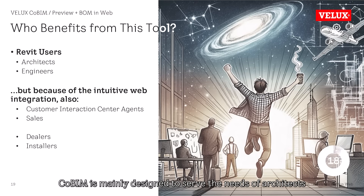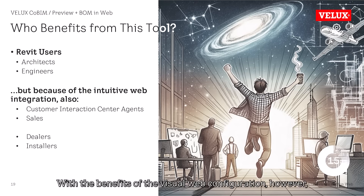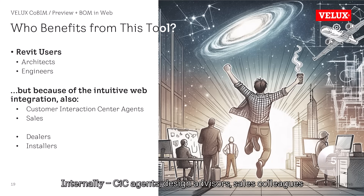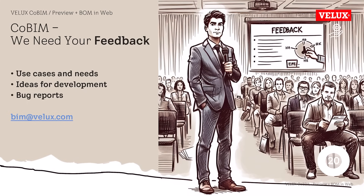Cobim is mainly designed to serve the needs of architects and engineers using Revit. With the benefits of the visual web configuration, however, it can be useful for many different needs because it represents PIM in pictures. Internally: CIC agents, design advisors, sales colleagues. And externally: dealers and installers.